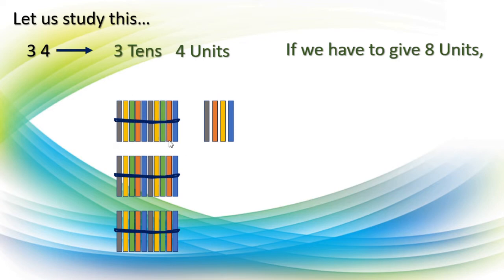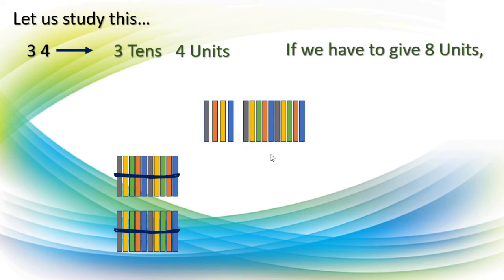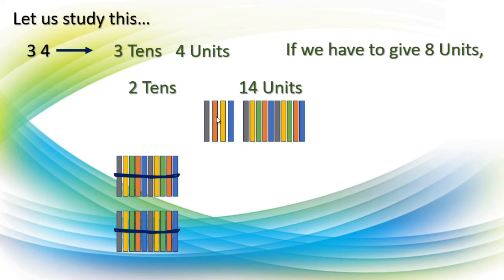We know we have to untie one of the tens, because we have only 4 units — 4 separate sticks. So if we untie one of the bundles from these 3 tens, we can easily give 8 units. We take this bundle and untie it. Now we have 2 tens remaining, and these 4 units plus the 10 we untied together make 14 units. One ten was untied, so we got 10 more units along with the 4 units — all together 14 units.